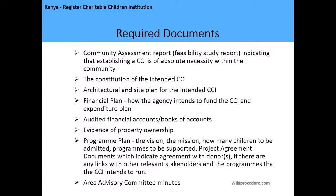Additional required documents include: financial plans on how the agency intends to fund the CCI and its expenditure plan, audited financial accounts (books of account), evidence of property ownership such as a title deed or lease agreement, and a program plan showing the vision, mission, how many children are to be admitted, programs to be supported, and project agreements indicating agreements with donors and links with other relevant stakeholders.